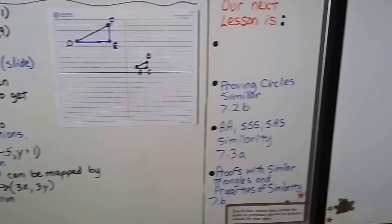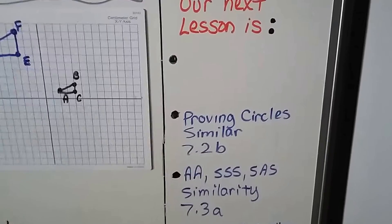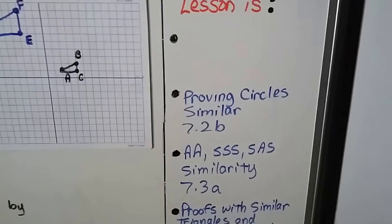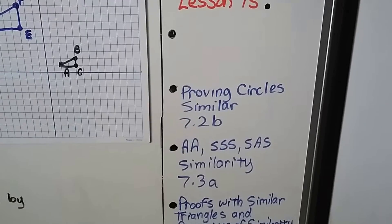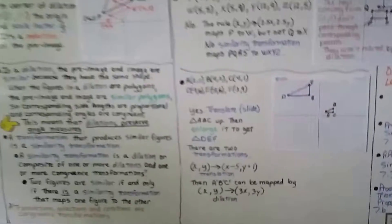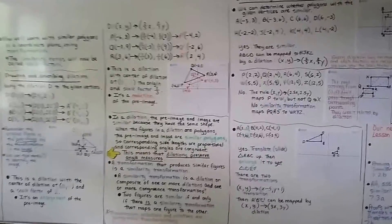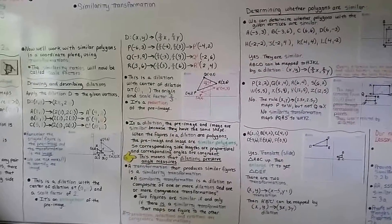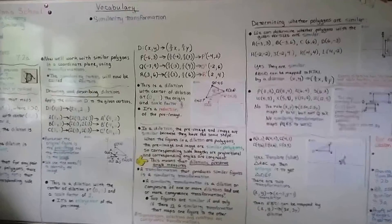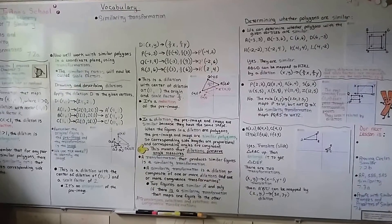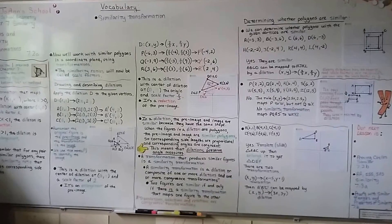Our next video is proving circles similar. That's 7.2B and that's going to be followed by angle-angle, side-side-side, and side-angle-side similarity for 7.3. So now you know about dilations and similarity transformations. And I hope you understood. And I'll see you next time when we'll talk about circles. Have a great day. Bye.